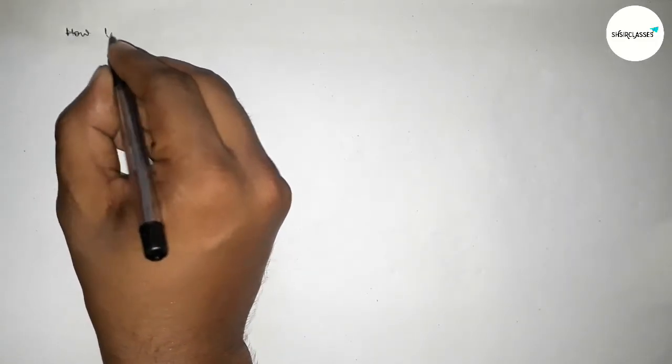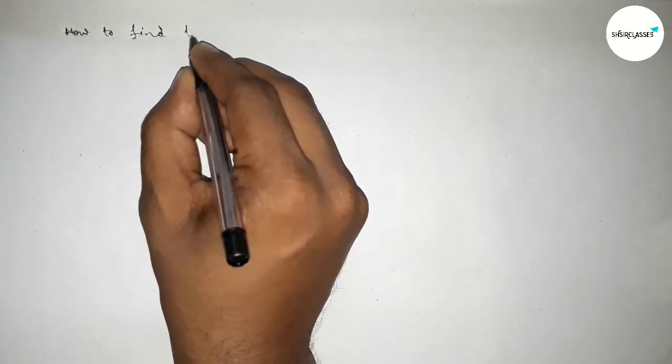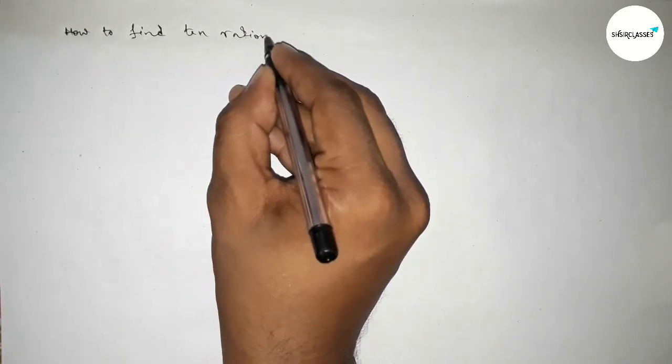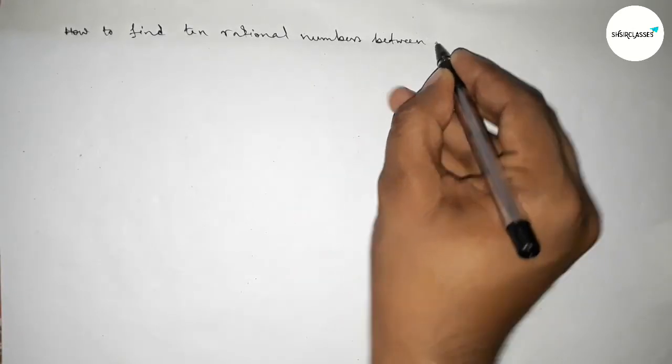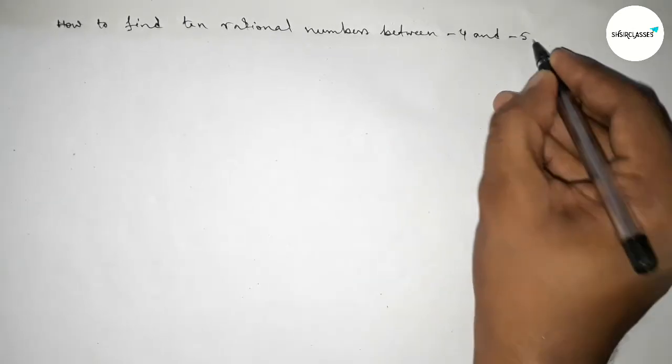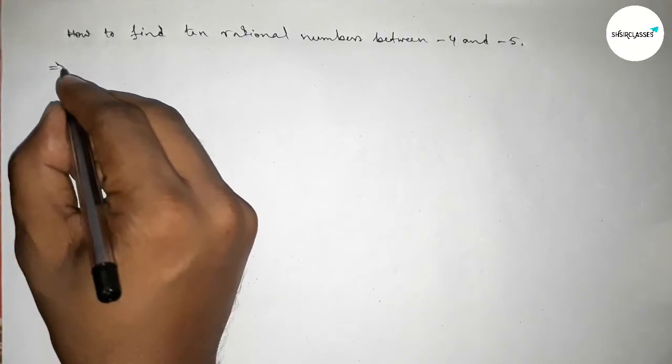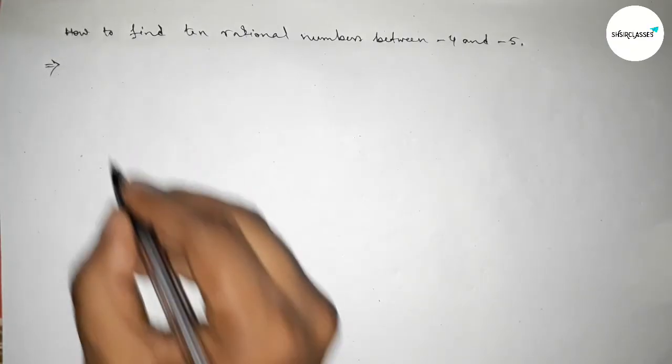Hi everyone, welcome to SI Share Classes. Today in this video we have to find 10 rational numbers between minus 4 and minus 5. So let's start the video. First of all, let's solve this problem. Here are the two given numbers: minus 4 and minus 5.